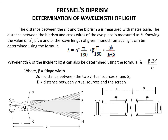Knowing the values of alpha and beta, we can calculate the wavelength of incident light lambda using the formula: lambda equals (alpha × π/180) × (beta × π/180) × AB / (A + B). Here, A is the distance between the slit and the biprism, and B is the distance between the biprism and the cross wire. By knowing the values of A, B, alpha, and beta, we can calculate the wavelength of incident light.